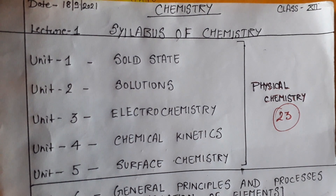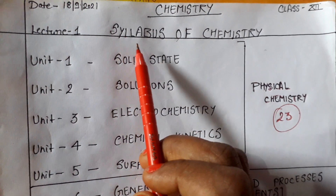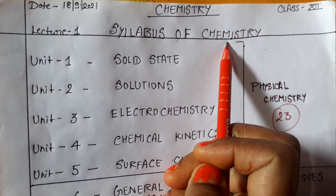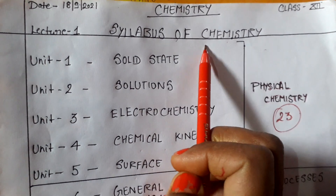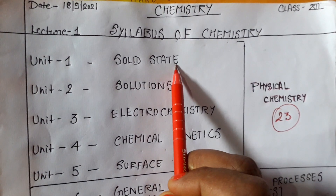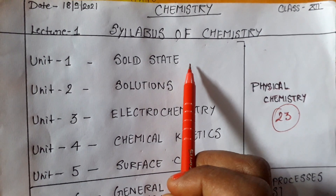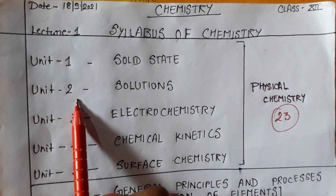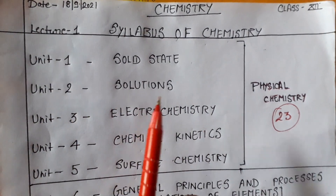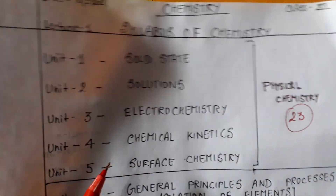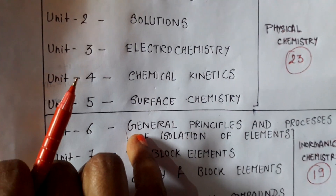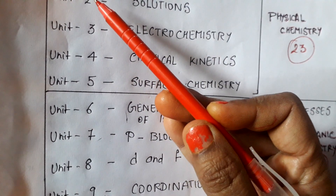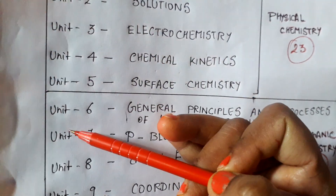So let's see the syllabus of chemistry. In class 12, we have to study 2 books — part 1 and part 2. In part 1, we have to study a total of 9 units.